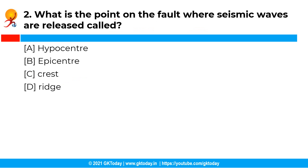The next question is: what is the point on the fault where seismic waves are released called? You have the following options and the correct answer is option A, that is hypocenter. The focus or hypocenter is the point on the fault where rupture occurs and the location from which seismic waves are released.